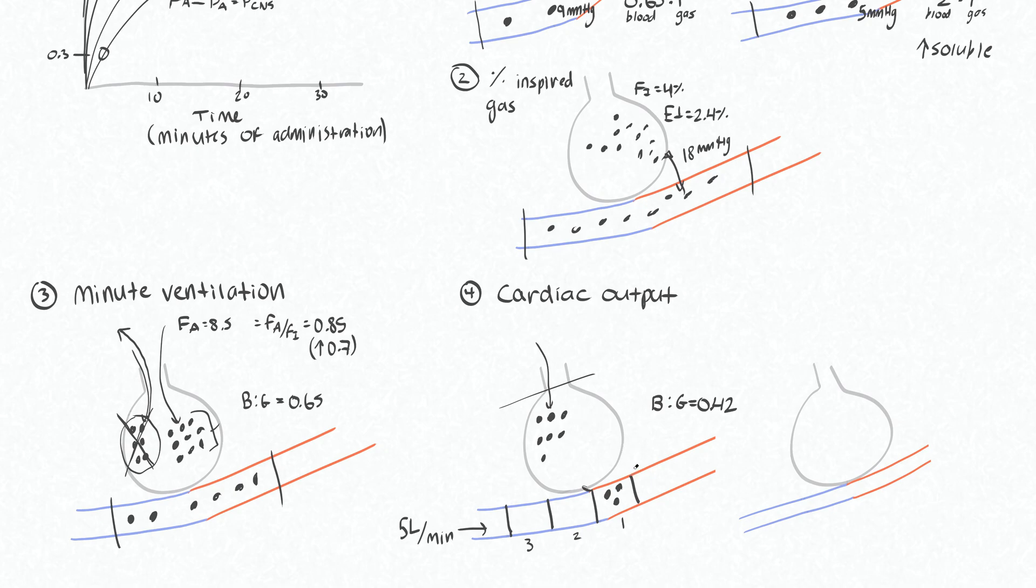Now let's look at what happens when this alveoli exchanges gas with this second compartment. We have one, two, three, four, five, six, seven gas particles left. So to establish a blood-gas partition coefficient of 0.42, we're going to move less particles into this one. So I'll actually just move two into the second group of blood that sees the alveoli instead of three.